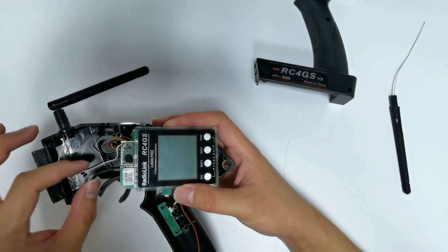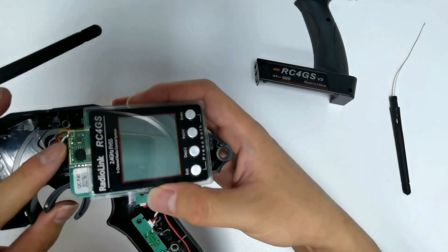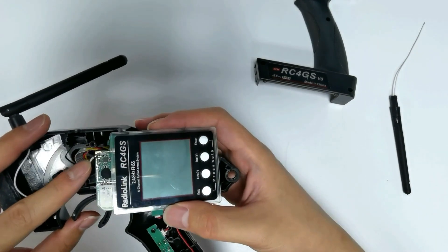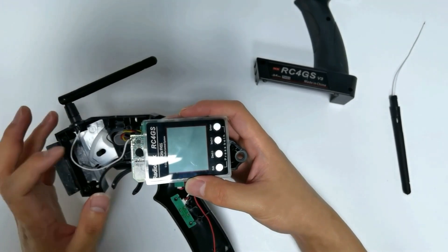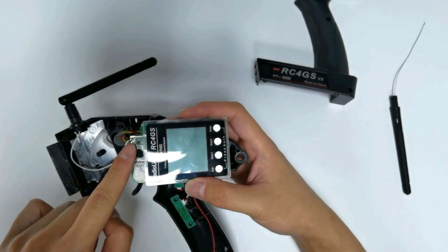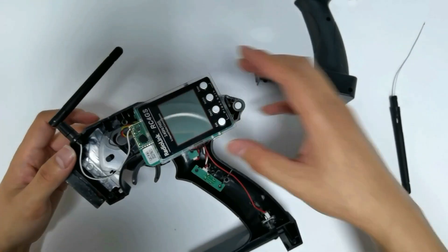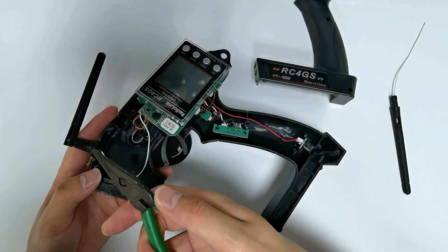Here is the transmission module. The antenna is connected to it. We need a soldering iron to desolder the damaged antenna and then remove the antenna.